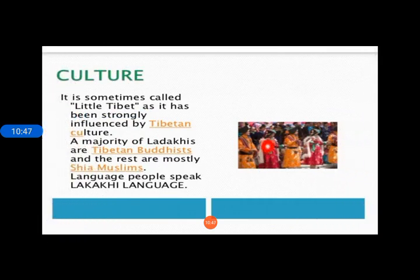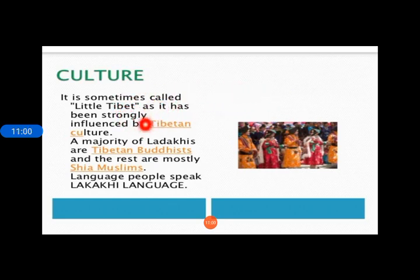Ladakh has a population of about 2 lakhs spread over the two districts of Leh and Kargil. It is sometimes known as 'Little Tibet' because it is influenced by Tibetan culture. The people follow two religions — Buddhism and Islam. Two languages are mainly spoken here: Ladakhi and Balti.